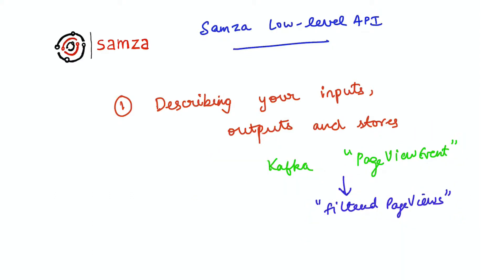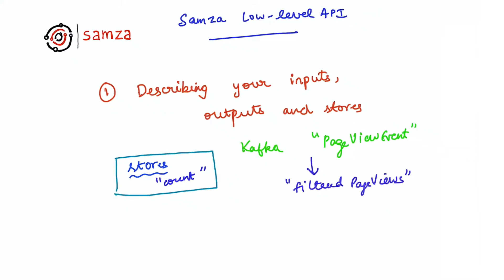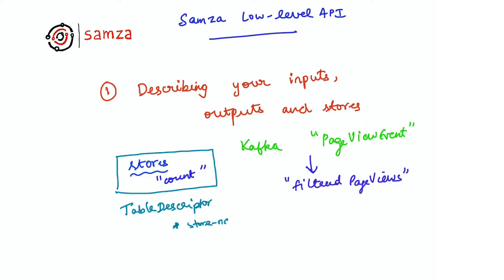Samza also provides you access to fault-tolerant state stores. For example, you may want to update, for each incoming message, a count of the number of unique pageviews for that particular user. For this, Samza provides a table descriptor that allows you to describe the properties of your stores. These properties include the name of the store, whether the store should use RocksDB or not, and what are the key and value types of that store.